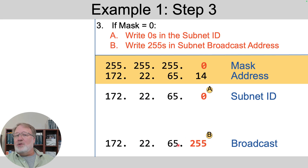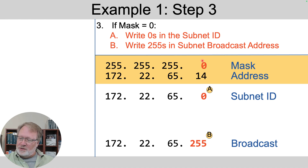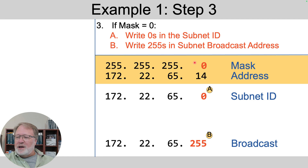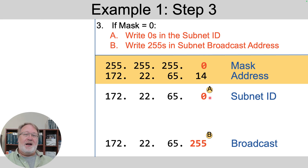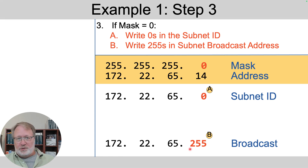Step three: if the mask value is zero, instead of copying, you write a zero in the subnet ID and a 255 in the subnet broadcast address. Our fourth octet has a mask of zero, so we write zero in the subnet ID and 255 in the broadcast address. All four octets are now complete.